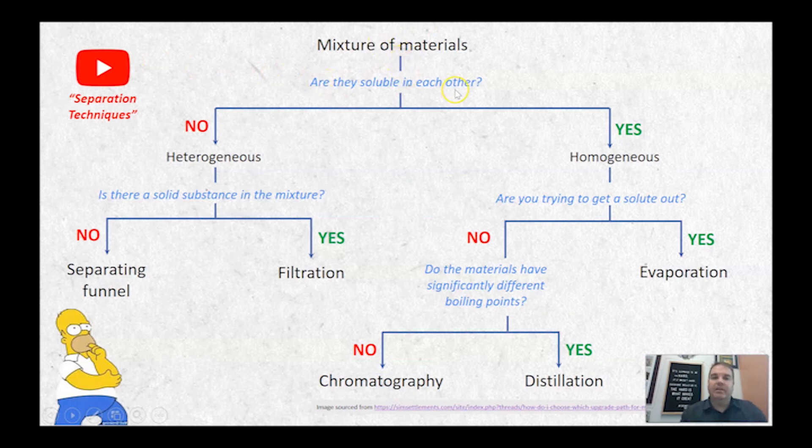If they're not, that's what's called a heterogeneous mixture. If there's a solid in there then you filter it out. If you're not, then you use a separating funnel. A separating funnel is where you have two layers, something like oil and water - you can easily separate them out using a separating funnel.